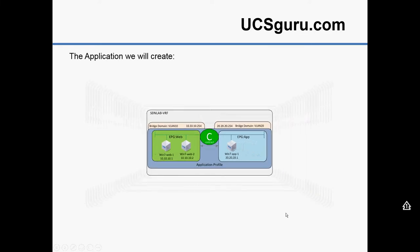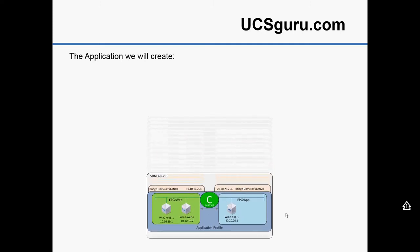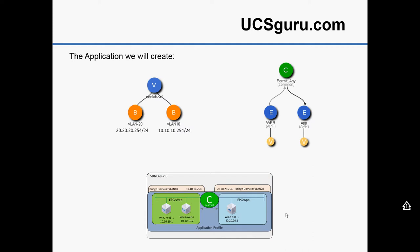In the ACI environment we would see our two endpoint groups - web and app - connected by a contract, which is effectively an ACL between the two endpoint groups. From an infrastructure perspective you would see our VRF and our two bridge domains. The V symbols shown are indicating we've integrated VMware into our environment, so those endpoint groups will show up as port groups within the VMware infrastructure.